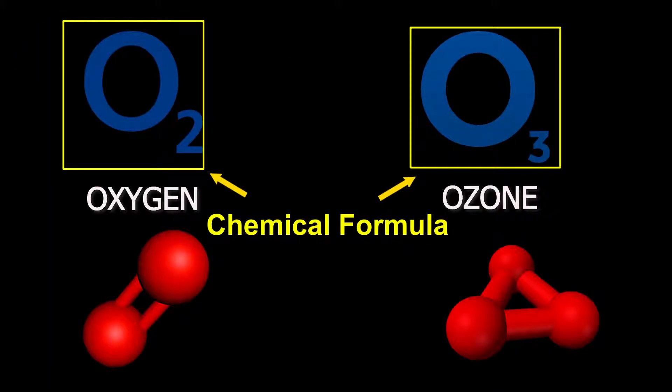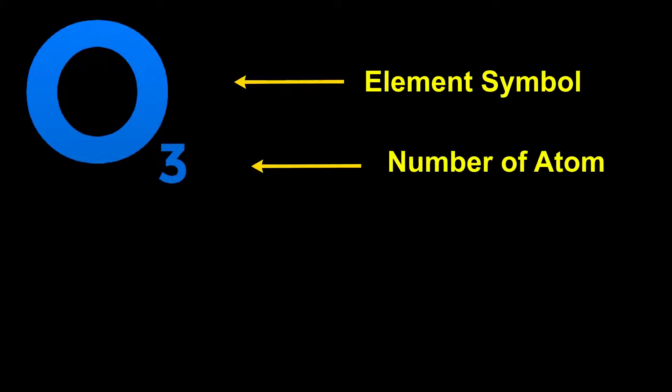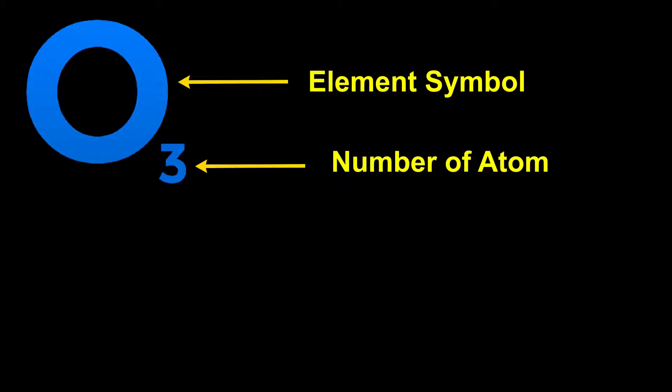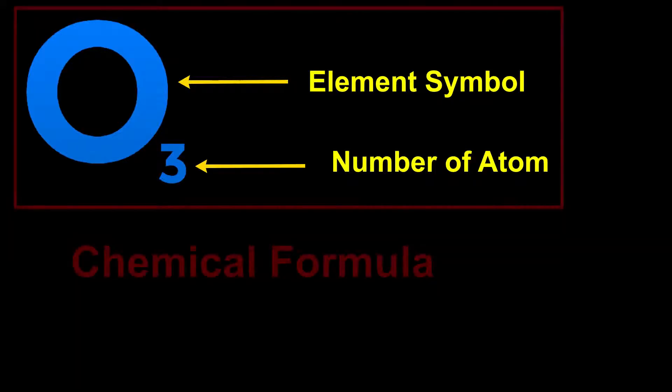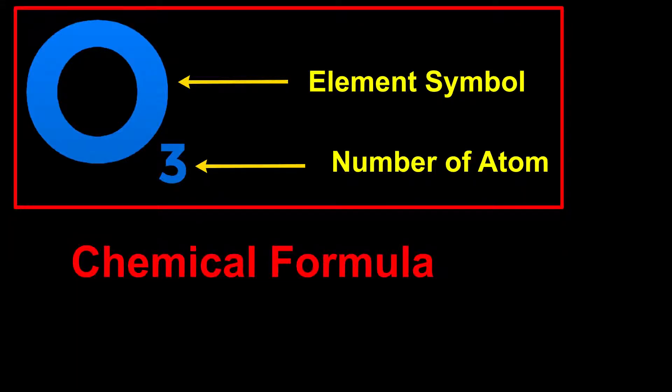O2 and O3 are chemical formulas of oxygen and ozone elements. It can be inferred that representation of an element or a molecule in the form of element symbols and number of atoms is called a chemical formula.